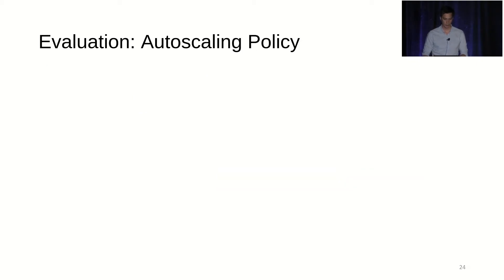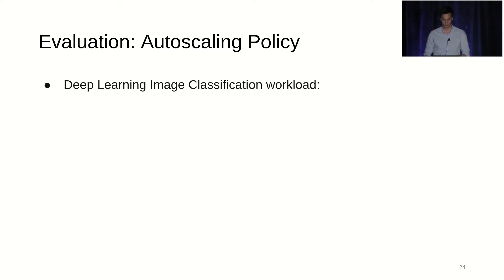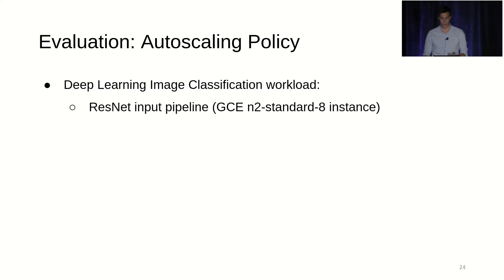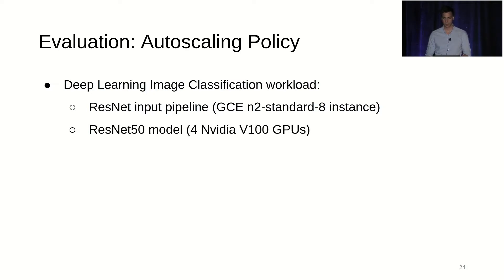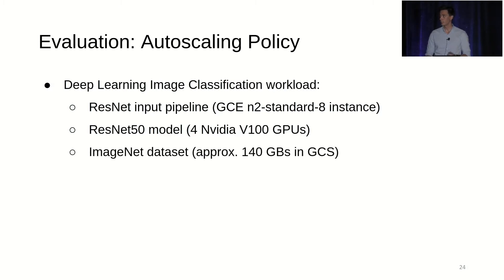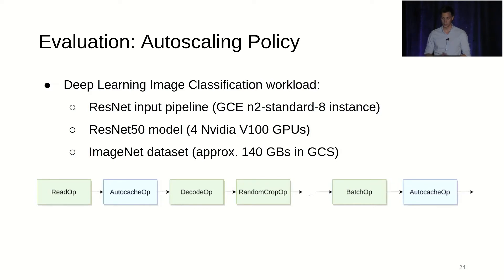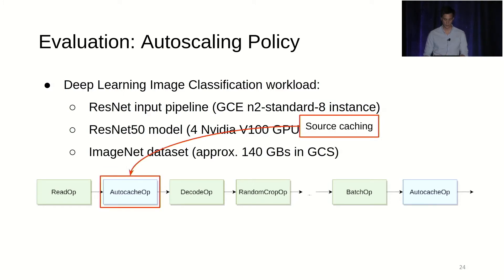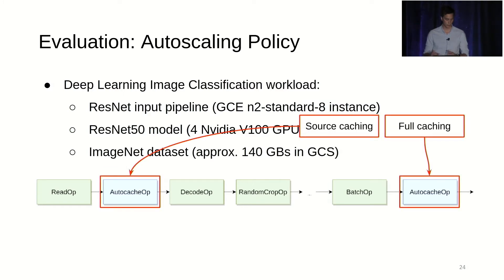Let's look at some evaluation for the auto-scaling policy. We choose a deep learning image classification workload consisting of the ResNet input pipeline running on N2 Standard 8 GCE instances, the ResNet-50 model training on four NVIDIA V100 GPUs, and the ImageNet dataset residing in GCS at approximately 140 gigabytes. The input pipeline uses standard image classification augmentations. We add auto-cache op hints right after reading the data and at the end of the pipeline — named source caching and full caching respectively.